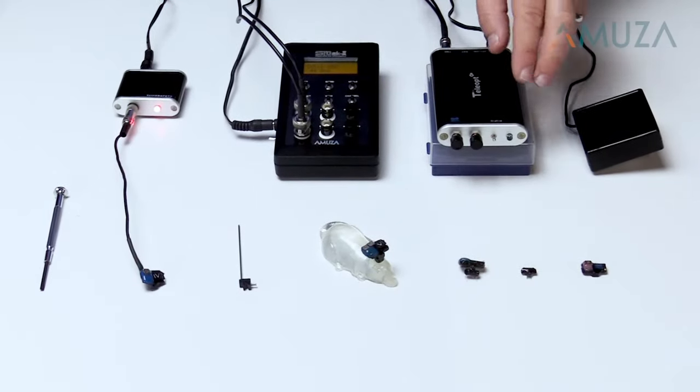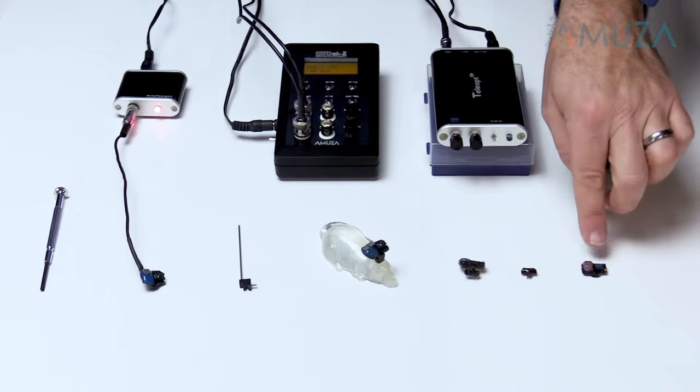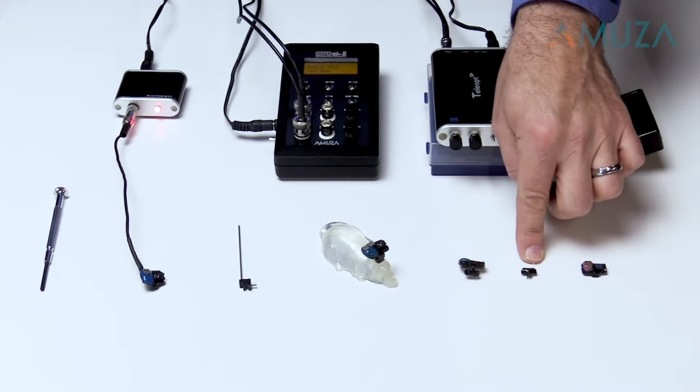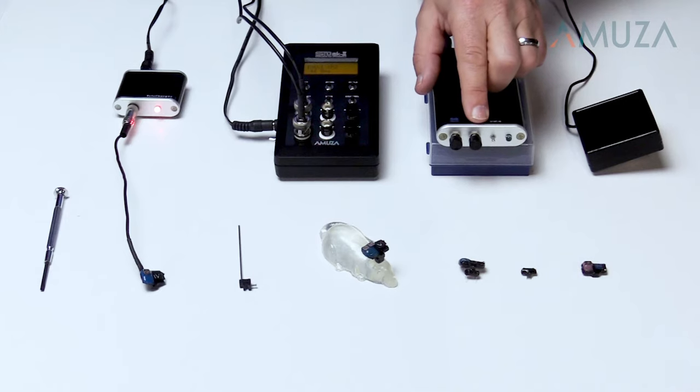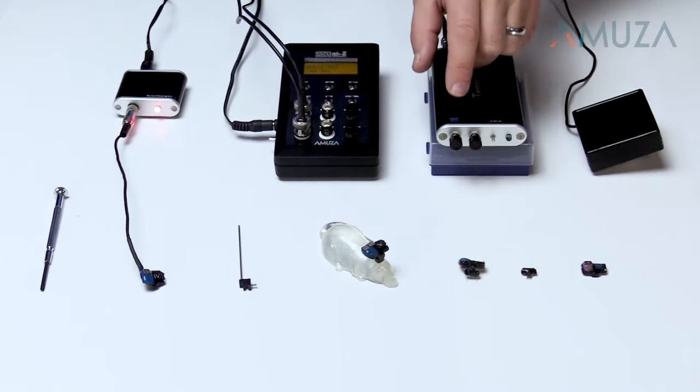The Teleopto system consists of a remote control, wireless receivers, and LED fiber optics. The whole system is ready to use out of the box. Just plug it in and you're ready to go.